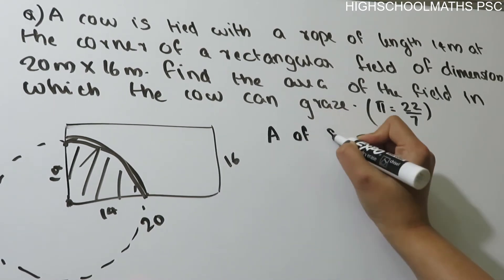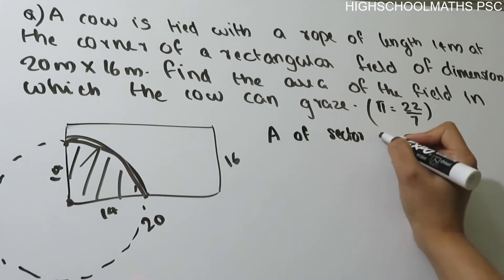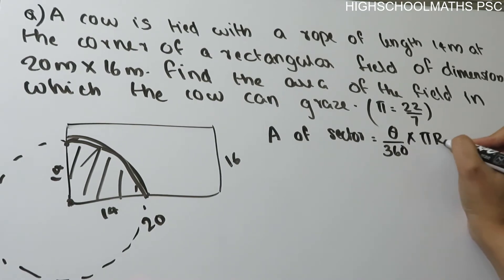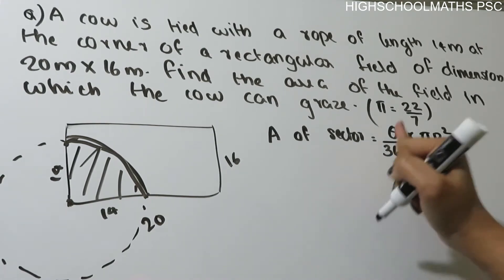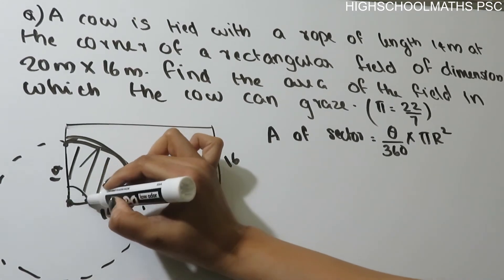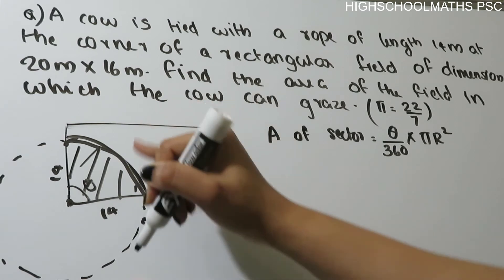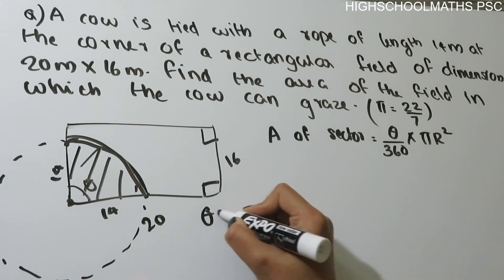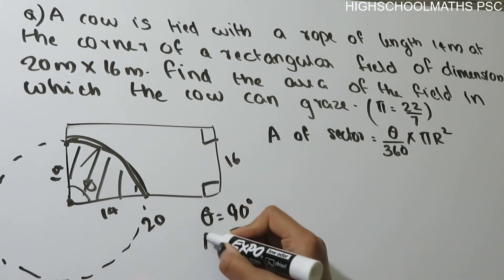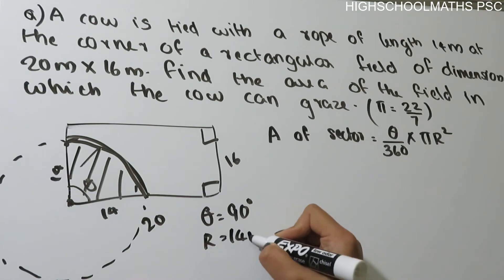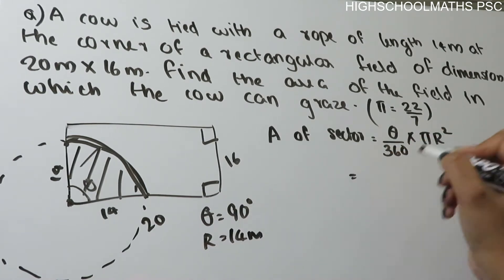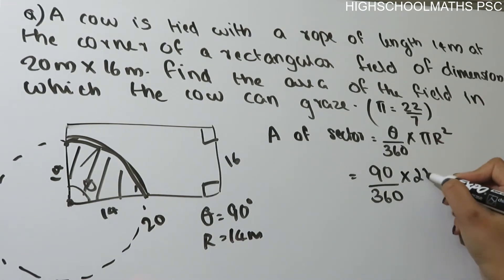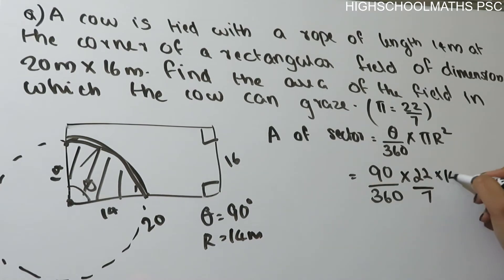Area of sector is equal to theta by 360 into pi r square. The theta is equal to 90 degrees, since the corner is a right angle. The radius is equal to the rope length. We will substitute: 90 by 360 into pi value 22 by 7, and r is 14.